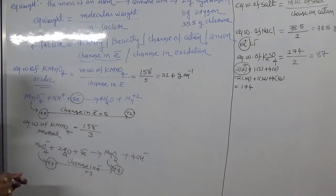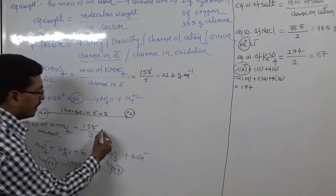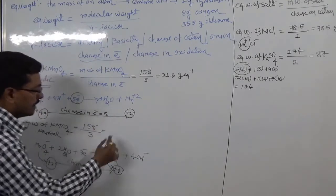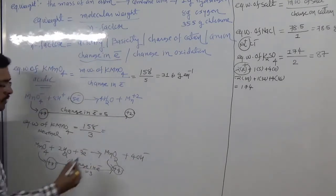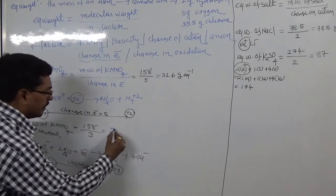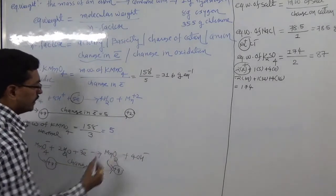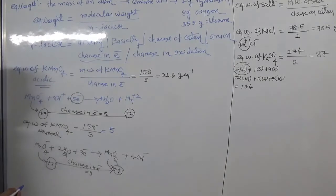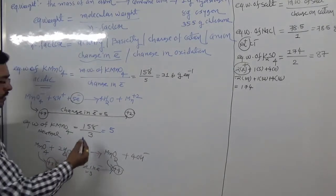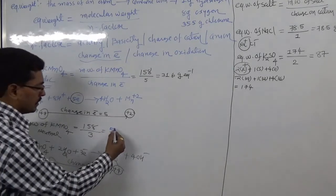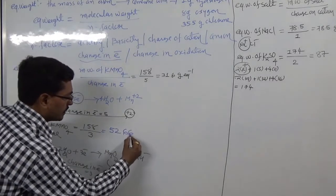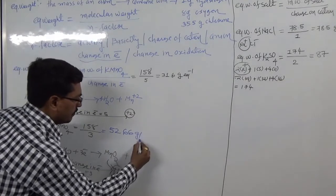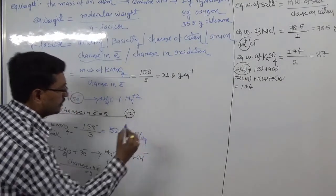For KMnO₄ in neutral medium, equivalent weight is 158 divided by 3, giving 52.67 gram equivalent.